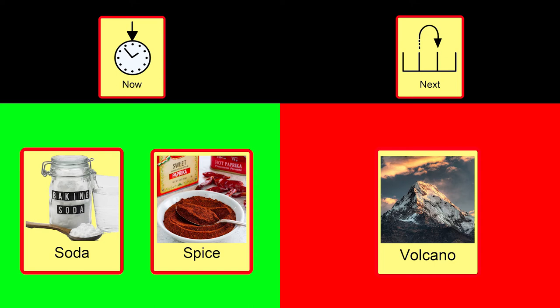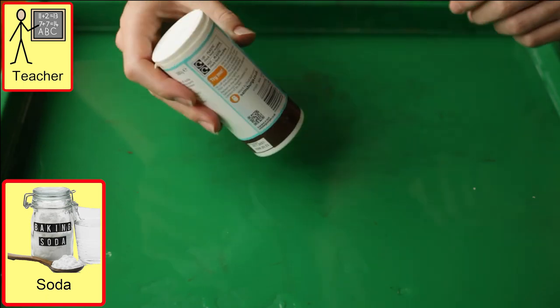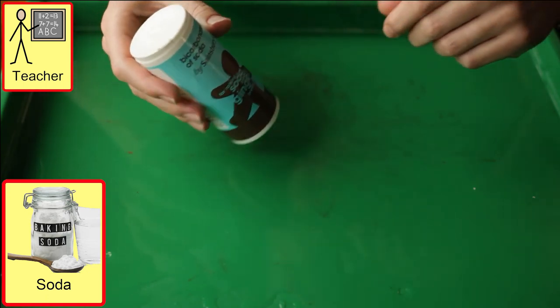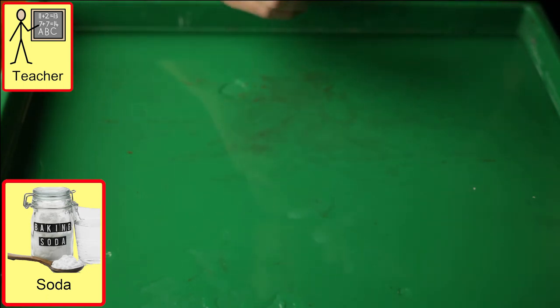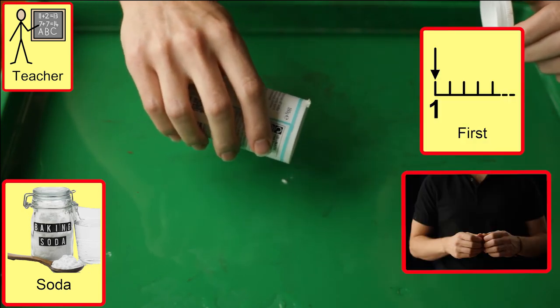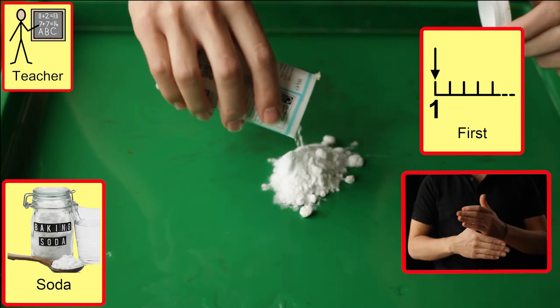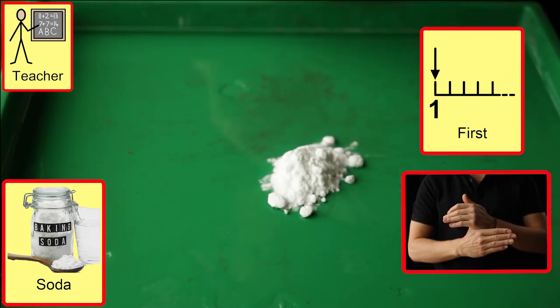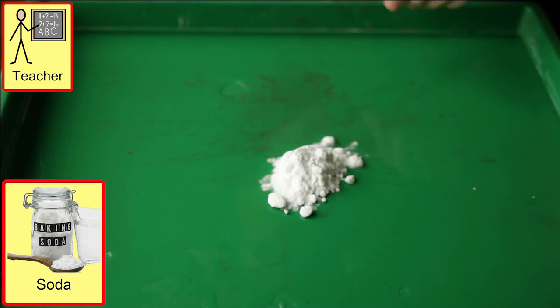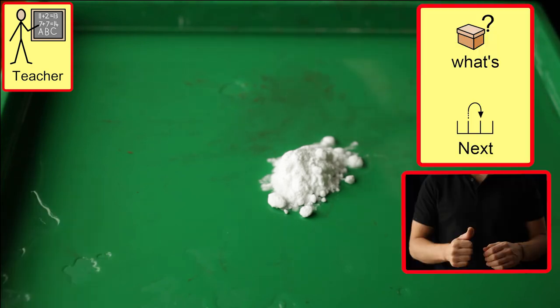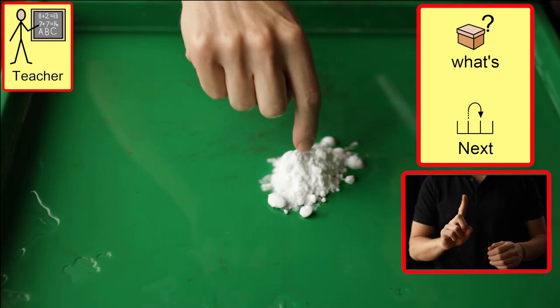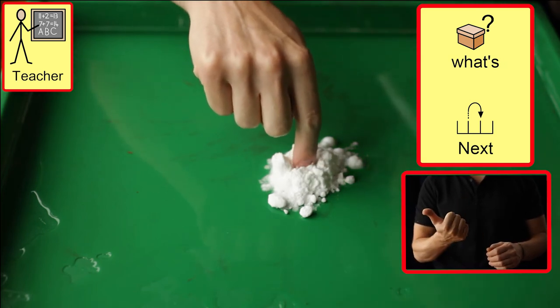First, we need to set up with soda and spice. Next, we will see the volcano. Where the student is developing language and we are following the now and next board, that now is soda and spice. So first, we create a pile of bicarbonate of soda. We can prompt the student to remember that first is soda, then asking what's next, supporting them with a visual prompt that we are adding spice before the volcano is ready.